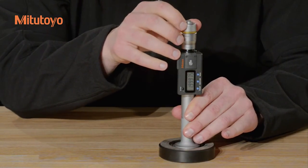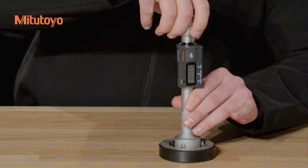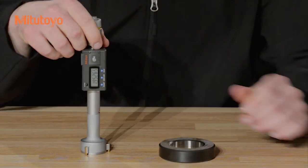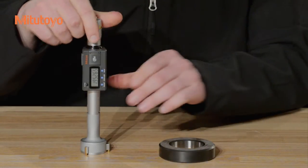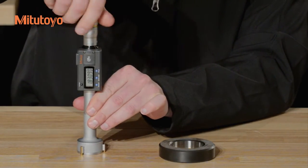Take care to protect the anvils and bearing surfaces from impact at all times. When retracting the spindle, be sure to stop once you feel resistance. Failure to do so can damage your gauge.